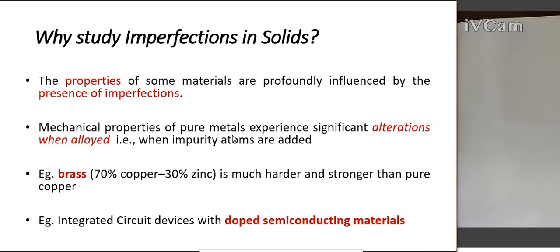The mechanical properties of pure metals experience significant alterations when alloyed. Alloying is the addition of impurities. There are different alloy materials available, and while alloying, we intentionally create imperfections in the material. The mechanical properties of a pure material can be altered by alloying. For example, consider iron and steel — iron is a pure metal, and by adding carbon, chromium, or any other type of impurities into iron, we can create steel. Steel is an alloy element of iron. By adding these alloy elements or impurities, we alter the properties of iron and get better properties.